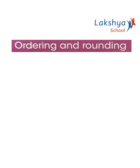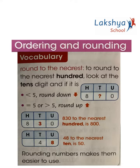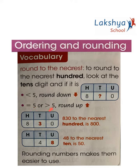To round to the nearest hundred, we need to look at the tens digit. If it is less than 5, we need to round it down. If it is equal to 5 or greater than 5, we need to round it up.